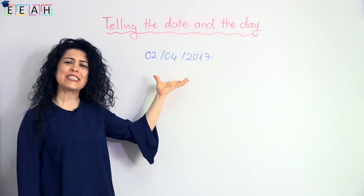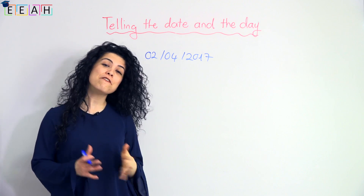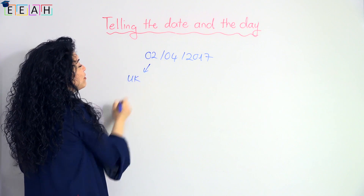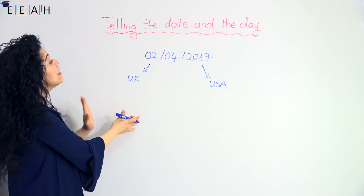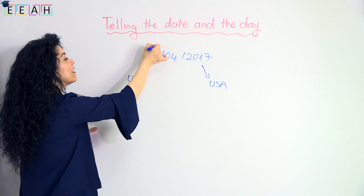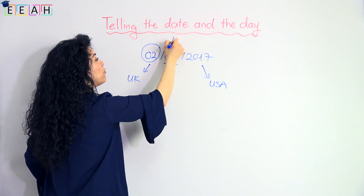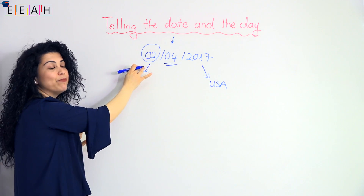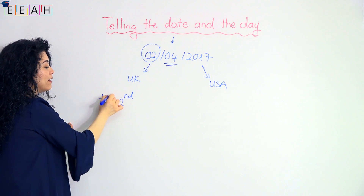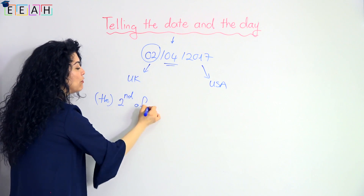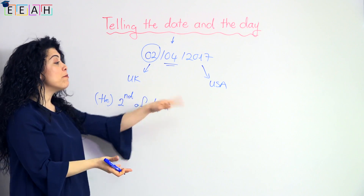How do you read this date? There are two possible ways. First, we have the British way, and you can also read it the American way. If you're reading it the British way, it is the second of April. So here we say the day first, then the month.